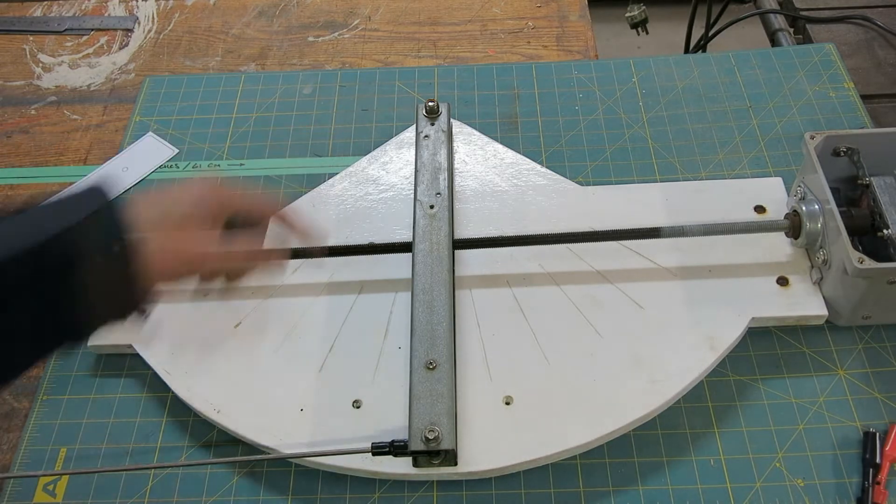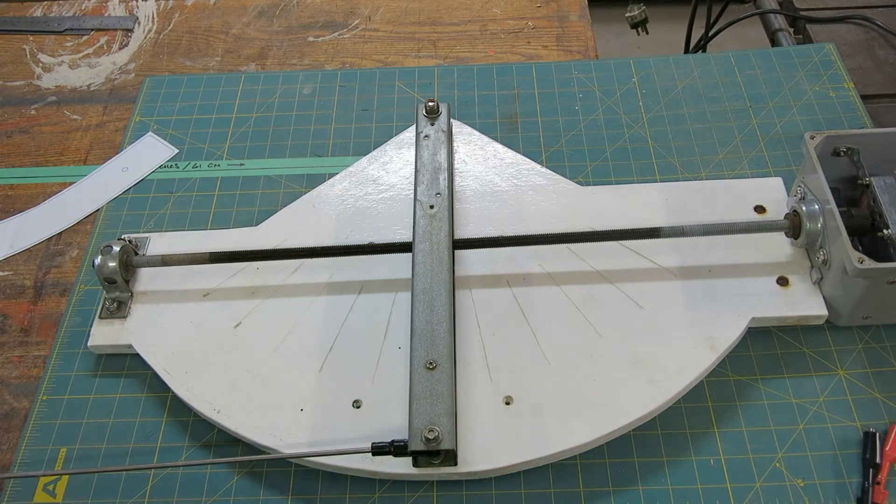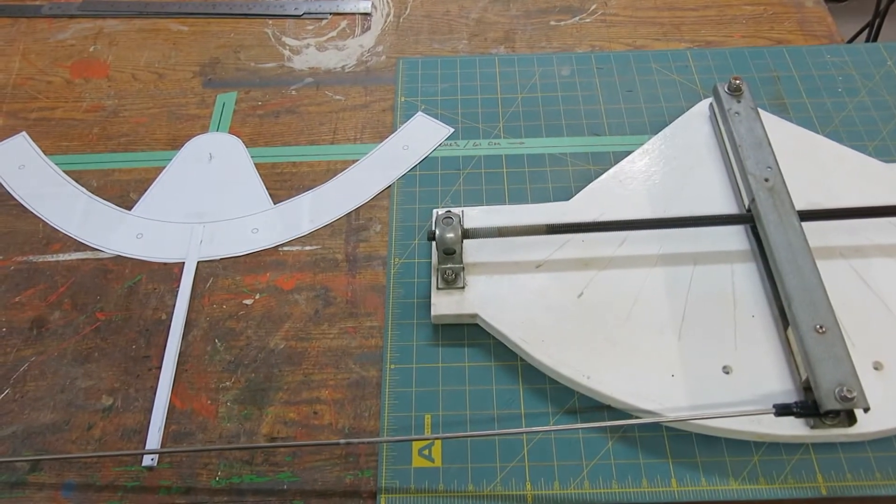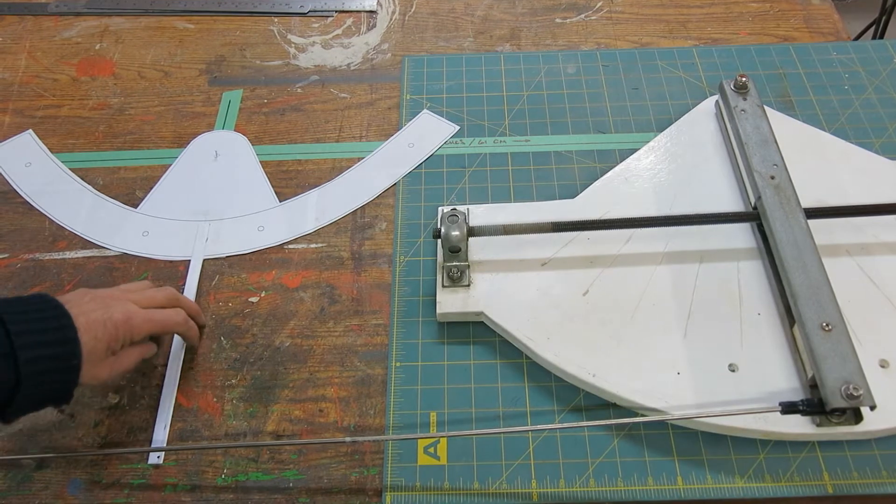I'll talk about the focal line here in a second but essentially what the arm does is mimic the motion of one of the solar collectors.